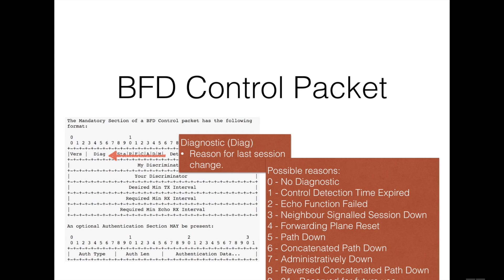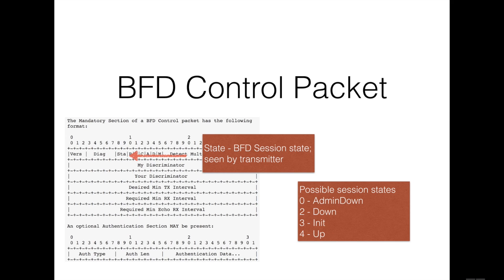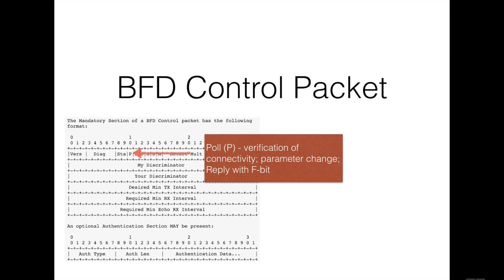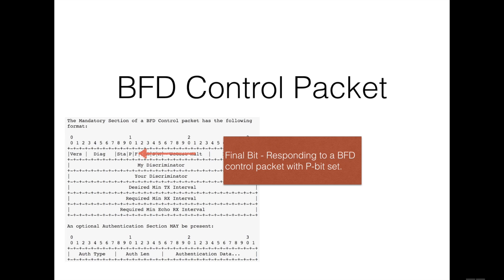The diagnostic field allows the remote system to determine the reason that the previous session failed. The state field (STF) indicates the current BFD state as seen by the transmitting peer. The poll field (P), if set, means the transmitting system is requesting verification of connectivity and is expecting a response packet with the final bit (F) set. If clear, the transmitting system is not requesting a response. The final field (F) indicates the transmitting system is responding to a BFD control packet that had the poll bit set; if clear, it is not responding to a poll.